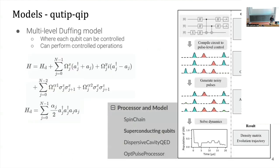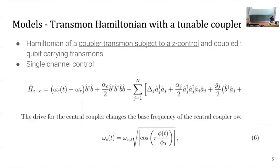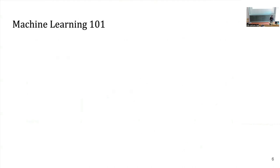In the Department of Physics here, under Christiana Koch and some of her students, we will be using the model Hamiltonian of a coupled transmon subject to Z-control. This will be the problem we are trying to make work with reinforcement learning.